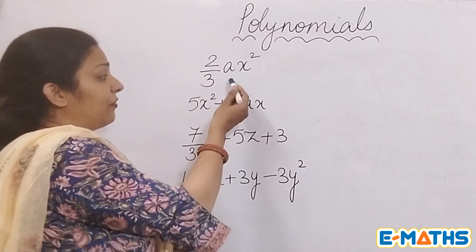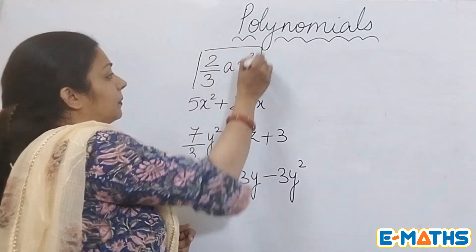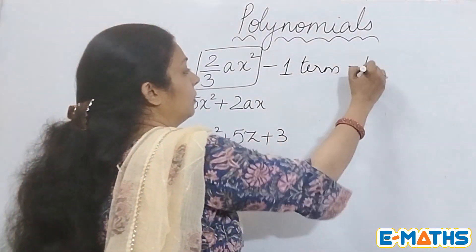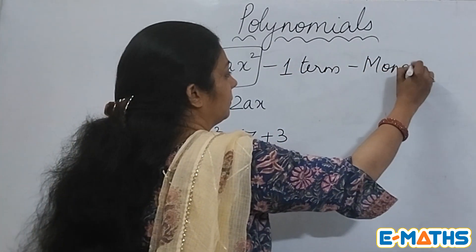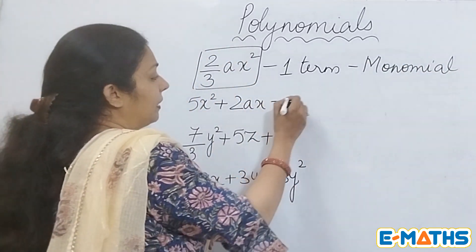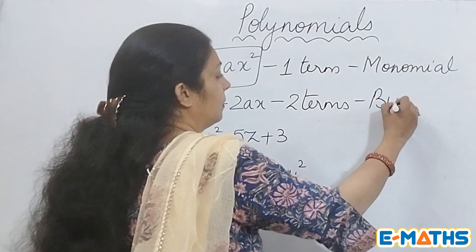As you can see, I have written certain expressions here. One term - this is just one term, so it is a monomial. If you look at the second one, it has two terms, which makes it a binomial.